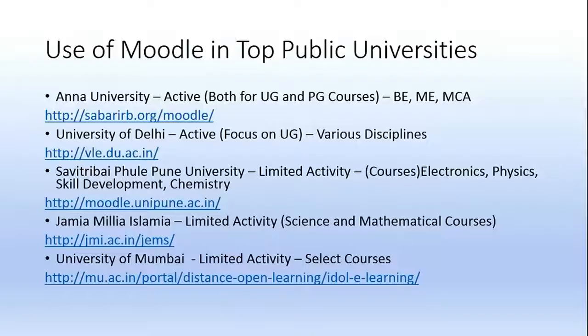Let's start with the good part. When you talk about active universities, one university in the top 10 list is using both UG and PG courses, but most of the courses offered through Moodle are technical courses — BE, ME, MCA. They are being actively offered, not completely, but as part of an assisted learning kind of environment. It's not even blended, possibly, but at least a public university is making an attempt to do that.